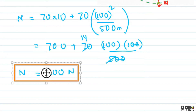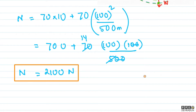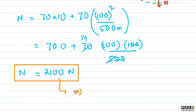So the apparent weight at the lower point is 2100 Newton. If this person were standing normally on the ground, their mass would feel equivalent to 210 kg — that is how much force they are exerting. This is the answer to the first part.